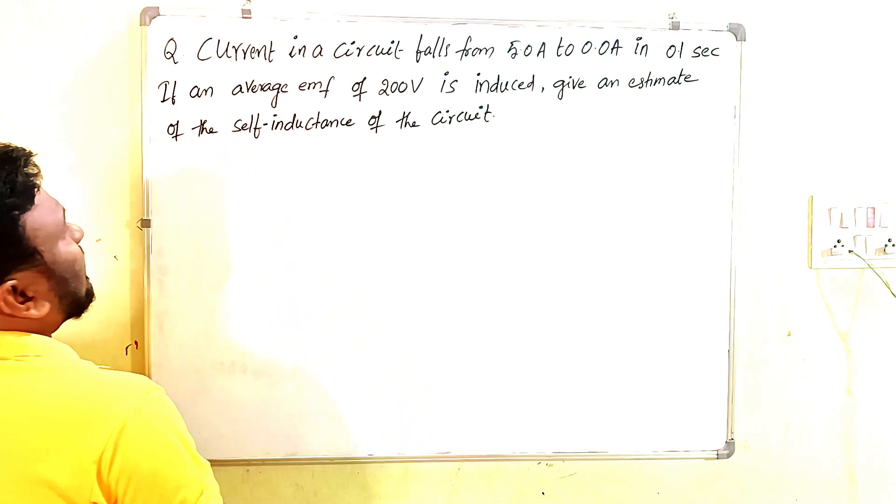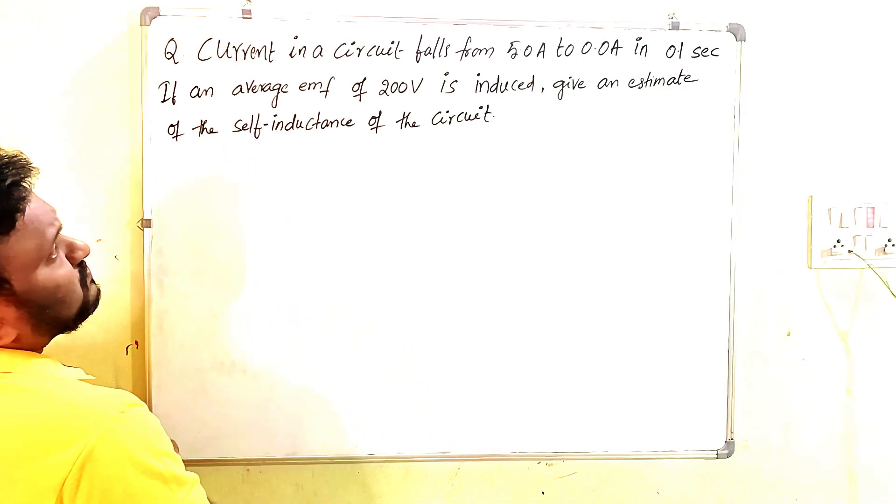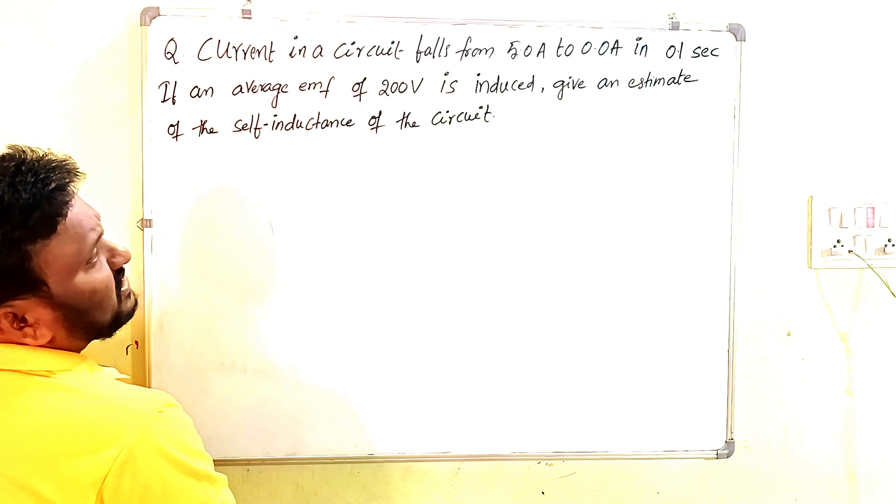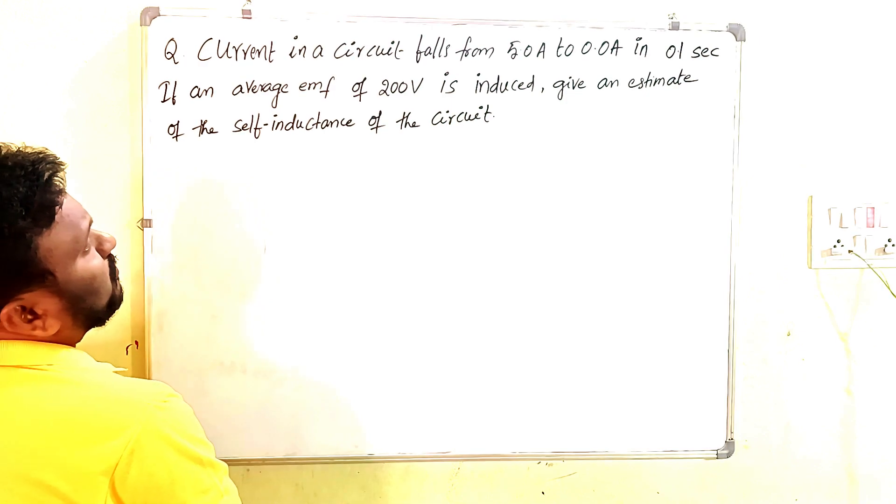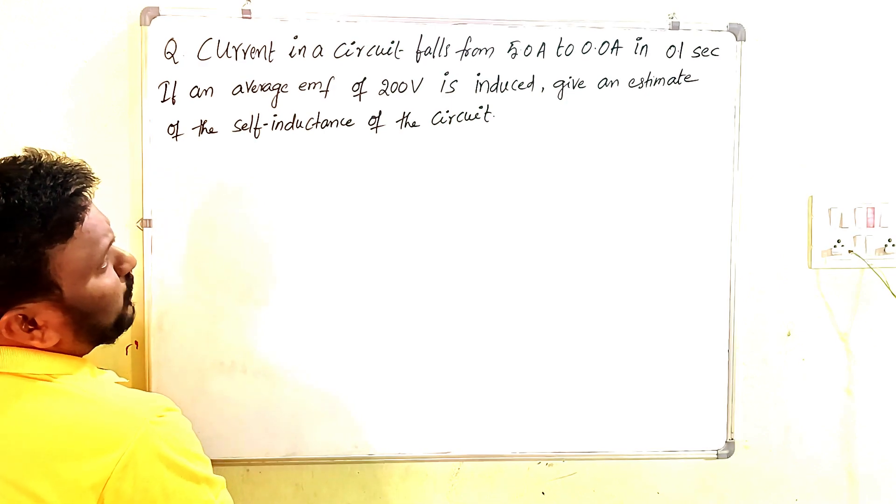A current in a circuit falls from 5.0 amperes to 0.0 amperes in 0.1 seconds. If an average EMF of 200 volts is induced, give an estimate of the self-inductance of the circuit.